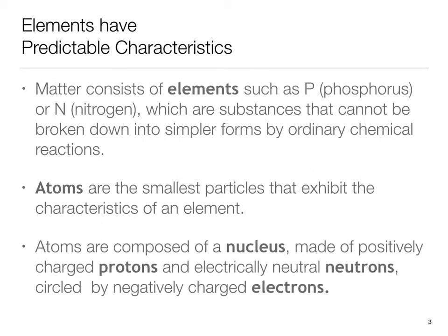Matter consists of elements, such as phosphorus or nitrogen, which are substances that cannot be broken down into simpler forms by ordinary chemical reactions. Each of the 118 accepted elements — 92 natural plus 26 created under special conditions — has distinct chemical characteristics.